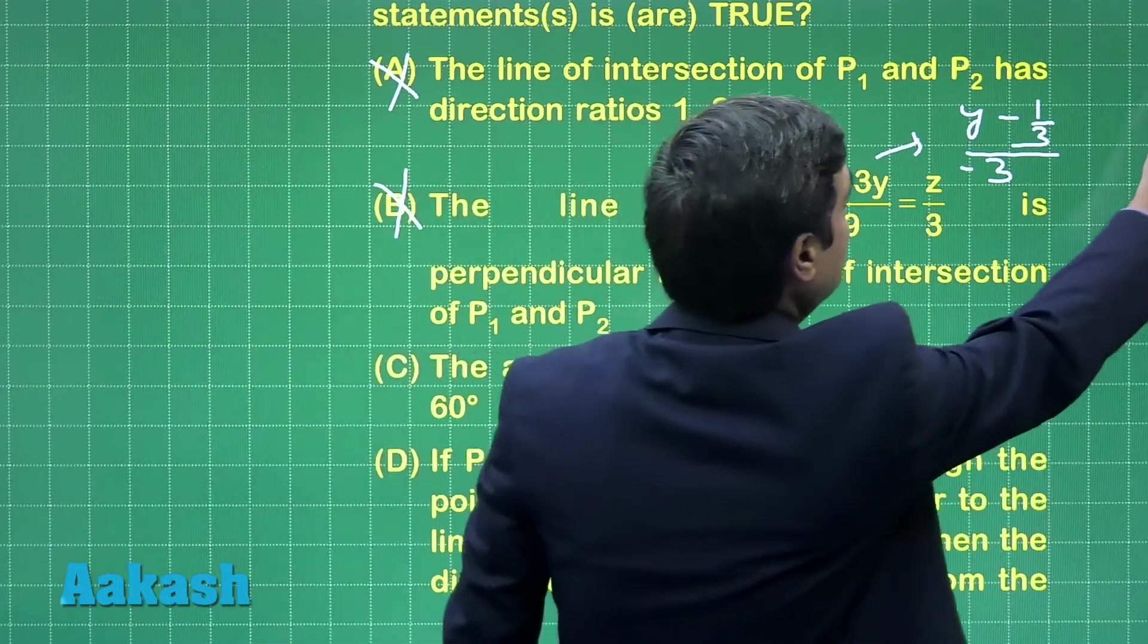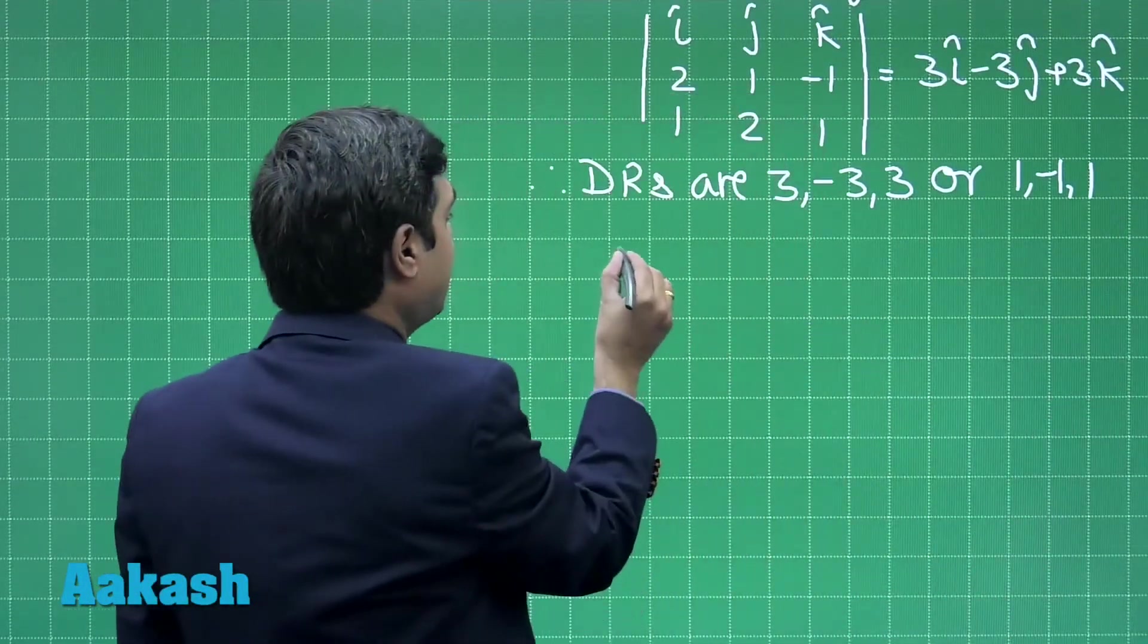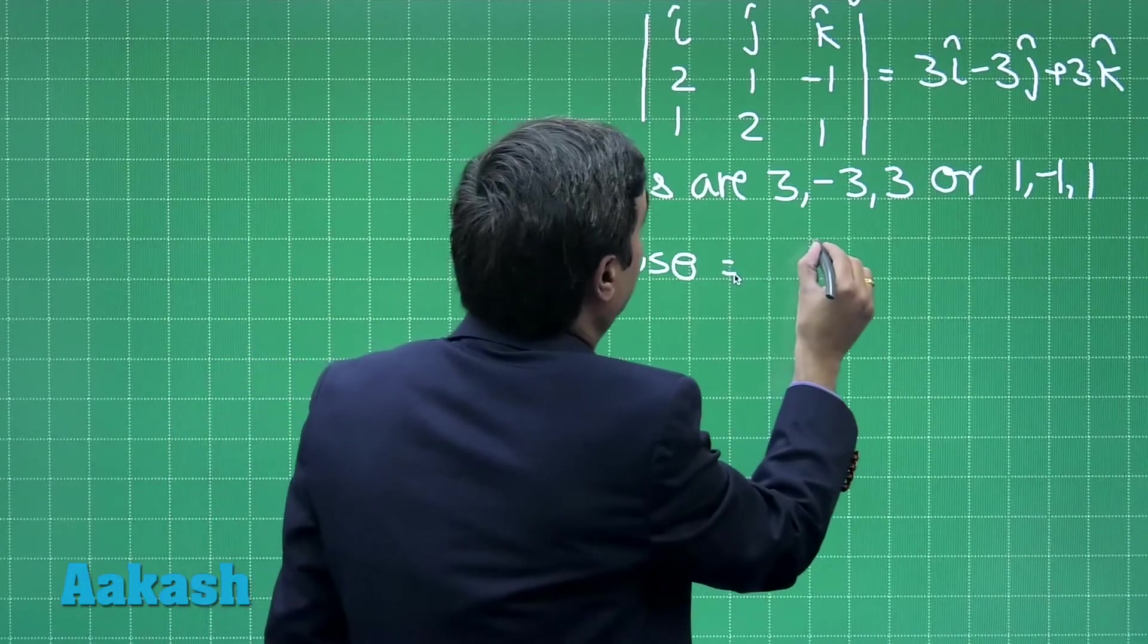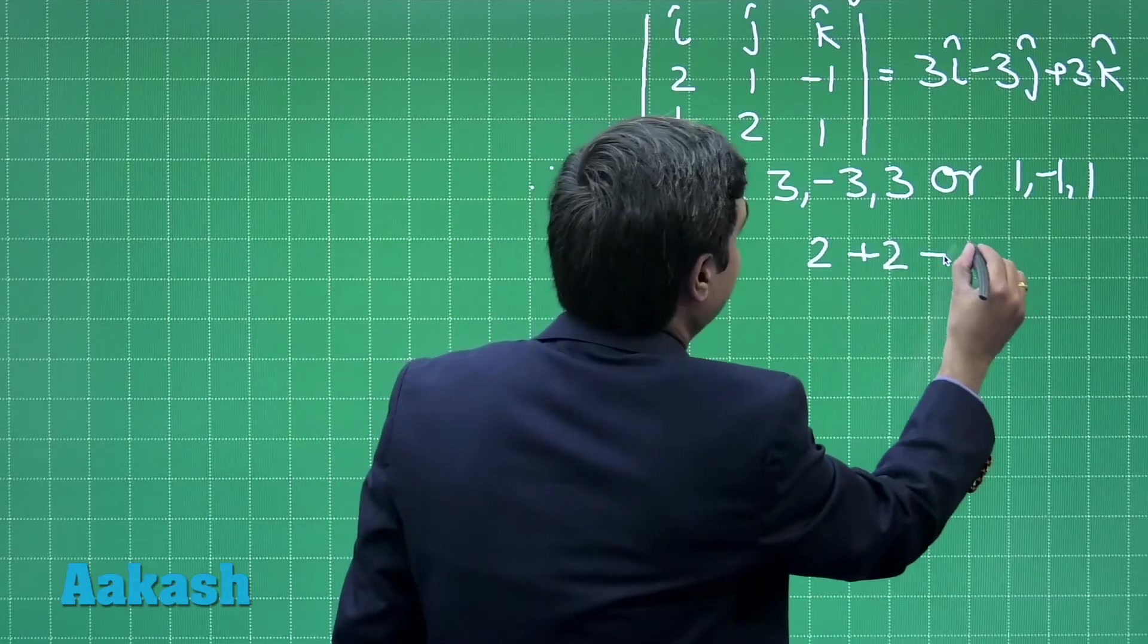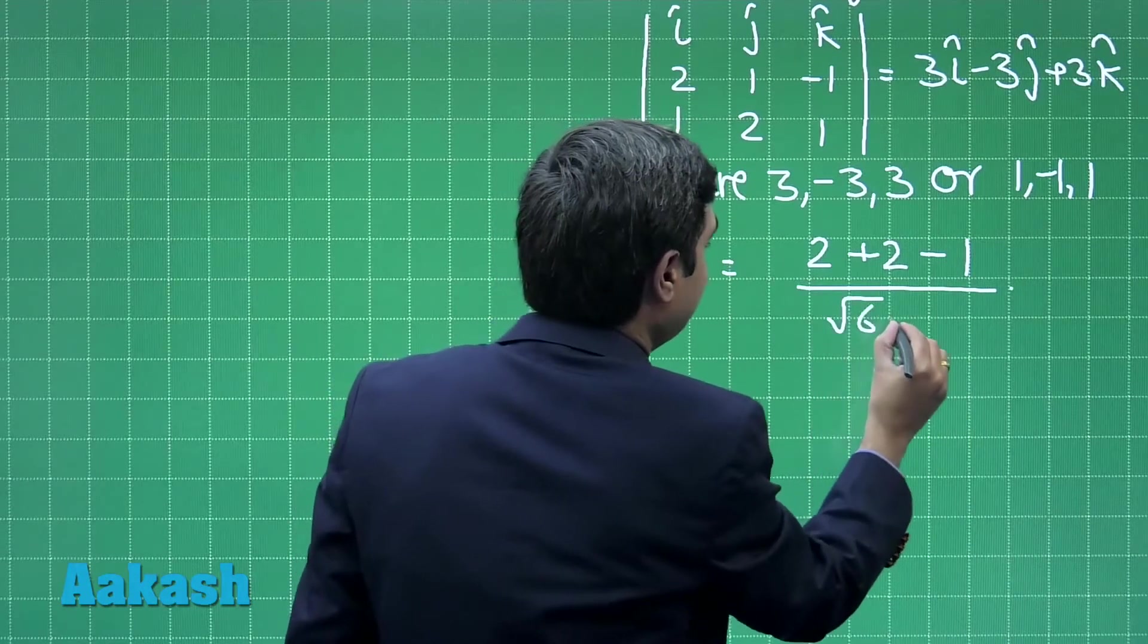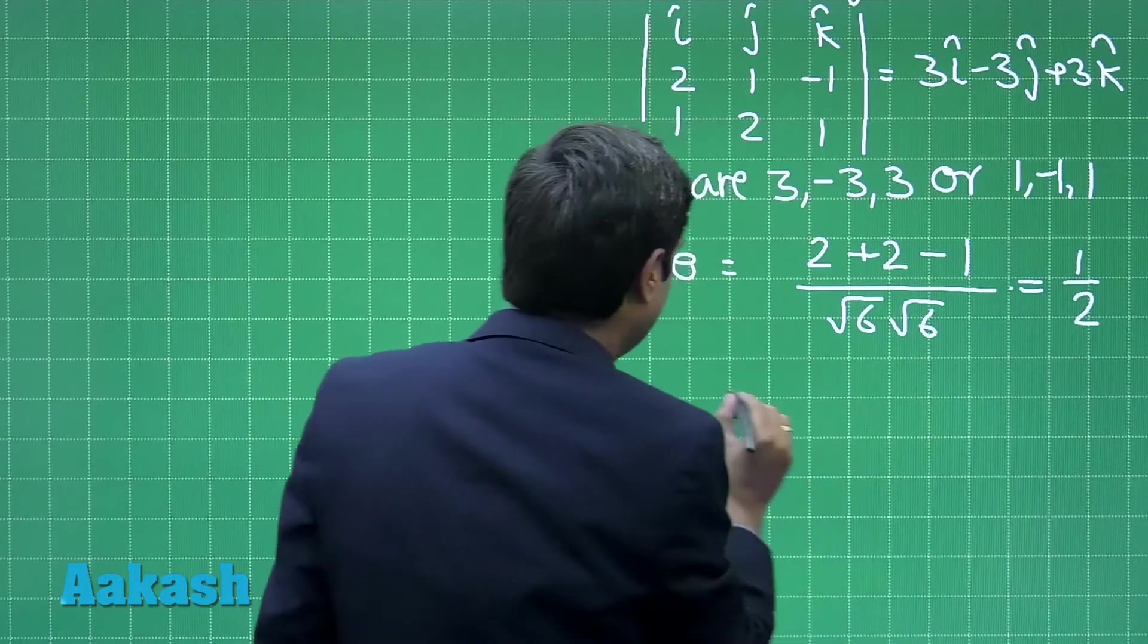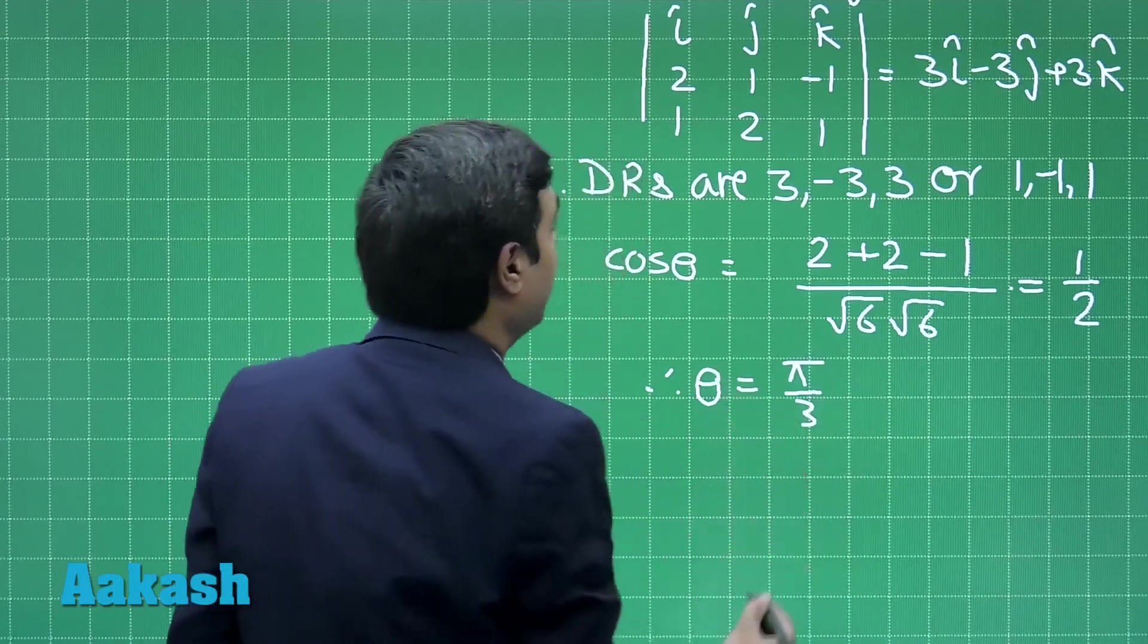Third, angle between two planes: let the angle be theta, then cos theta equals (2 plus 2 minus 1) divided by square root of 6 into square root of 6, that is 1/2. Hence, we find angle theta as 60 degrees or pi by 3. So third option, that is option C, is correct.